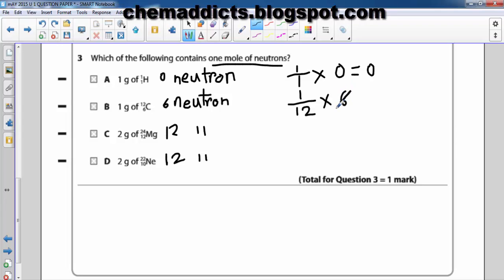So the number of moles of neutron is half. So this mass doesn't match with this requirement.